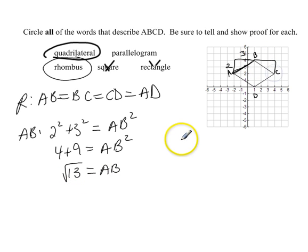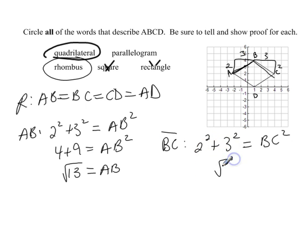We're going to do the same thing for BC. To find the length of BC, this has a leg of 2 and a leg of 3 and a hypotenuse that we're looking for. So 2 squared plus 3 squared equals BC squared. We just worked out this same thing, so we know it's the square root of 13 is BC.